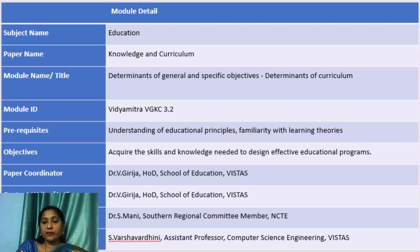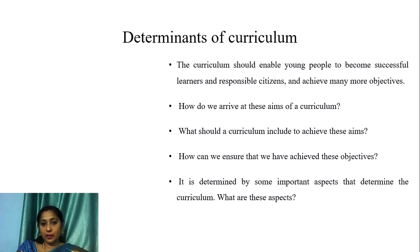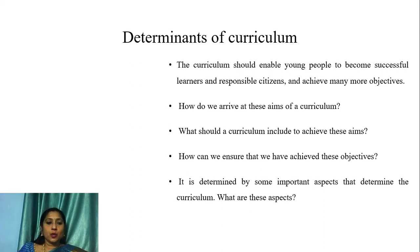Let us look into the determinants of curriculum. The curriculum should enable young people to become successful learners and responsible citizens and achieve many more objectives. How do we arrive at these aims of our curriculum? What should a curriculum include to achieve these aims, and how can we ensure that we have achieved these objectives? It is determined by some important aspects, so what are these aspects?